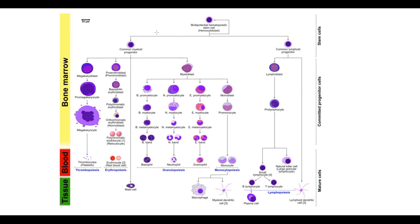Here we can see hematopoiesis, which can be subdivided into myelopoiesis and lymphopoiesis. In normal conditions, to make a mature neutrophil, a stem cell undergoes differentiation into a common myeloid progenitor cell, then into a myeloblast. The myeloblast matures into a promyelocyte, then myelocyte, metamyelocyte, bands, and finally segmented neutrophils — the most mature form. But if a mutation occurs — in this case, translocation between chromosomes 15 and 17 — it disrupts maturation of promyelocytes into myelocytes.